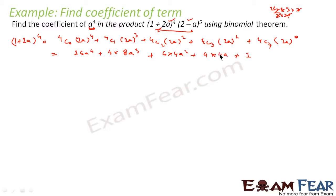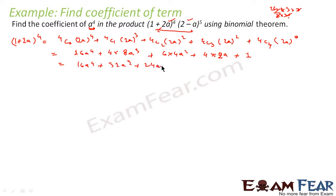So what we have got for (1+2a)⁴ is: 16a⁴ + 32a³ + 24a² + 8a + 1.